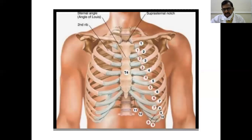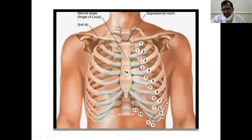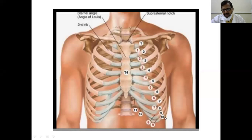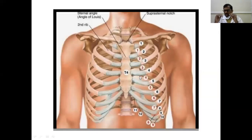On both sides, the boundary is formed by ribs — 12 pairs. This is the first rib and this is the 12th rib. The 11th and 12th ribs are called floating ribs because they are not reaching the costal margin. These are all the structures taking part in the formation of the boundaries of the thoracic cavity.